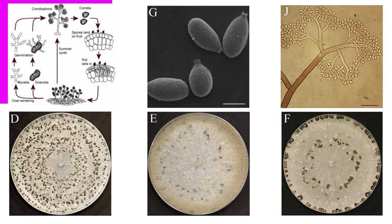A common method by which Botrytis cinerea infects a host is through hardened infectious tissue called sclerotia, which develop in dead tissue and can survive for long periods in debris. These structures produce conidiophores and subsequently conidia, which infect living tissue. Conidia formation is stimulated by specific wavelengths of light, and near-ultraviolet wavelengths are used to induce sporulation in laboratories, though some populations can sporulate in darkness.